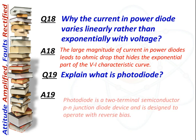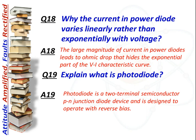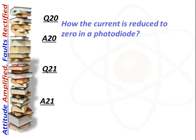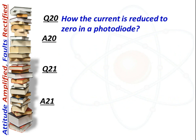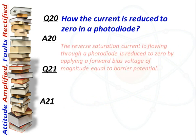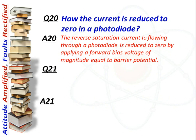Next question: What is a photodiode? Answer: A photodiode is a two-terminal semiconductor PN junction device designed to operate with reverse bias. The reverse saturation current flowing through a photodiode is reduced to zero by applying a forward bias voltage of magnitude equal to the barrier potential.